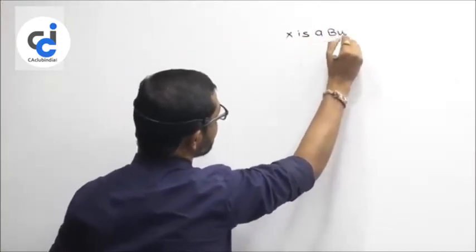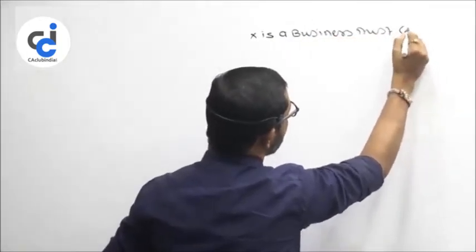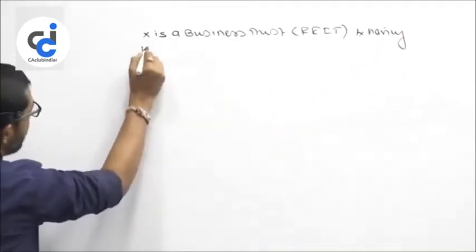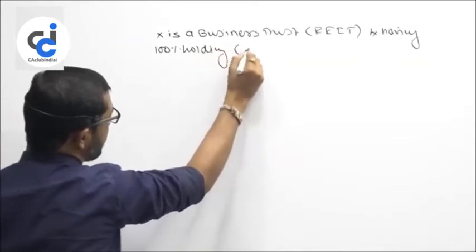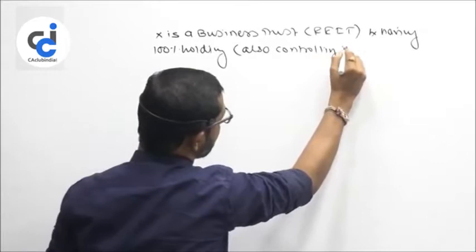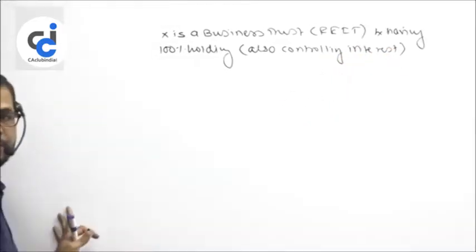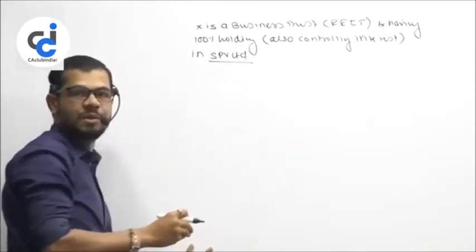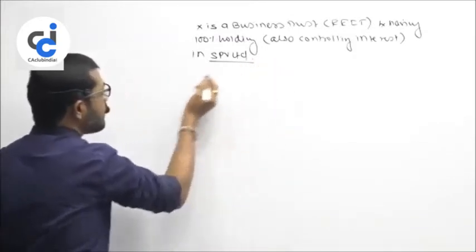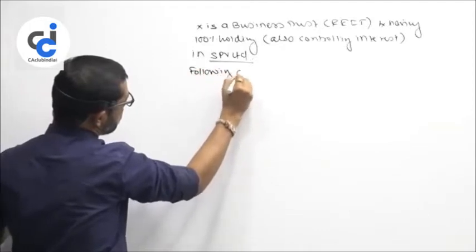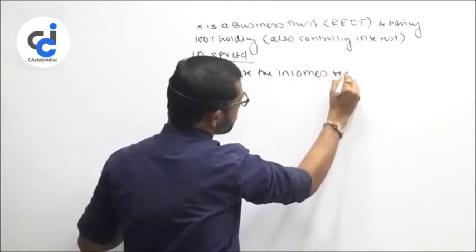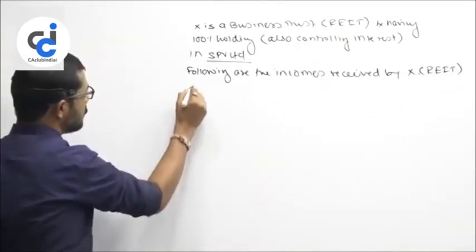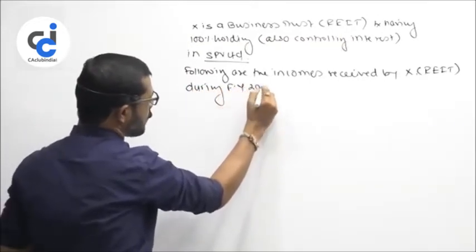X is a business trust — say a Real Estate Investment Trust — having 100 percent holding and also controlling interest, that is more than 50 percent, in SPV Limited. That is the SPV. Following are the incomes received by X, that is the Real Estate Investment Trust, during financial year 2016-17.